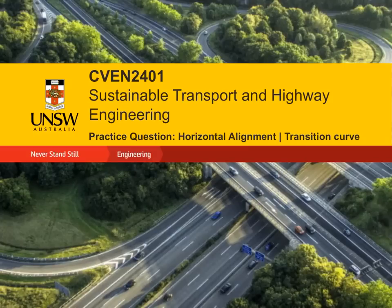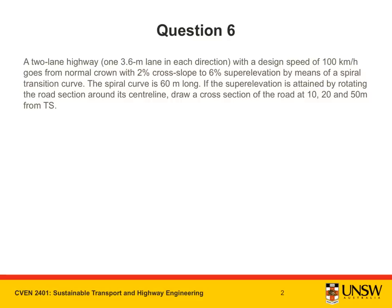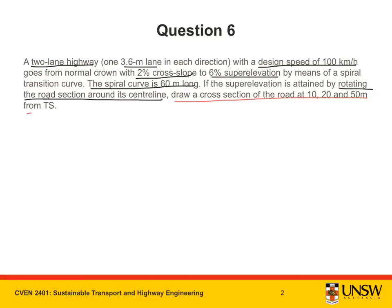In this video we're going to do a practice question on horizontal alignment, specifically for transition curves. The question is: a two-lane highway with one 3.6 meter lane in each direction, with a design speed of 100 kilometers per hour, goes from normal crown with a 2% cross slope to 6% super elevation by means of a spiral transition curve. The spiral curve is 60 meters long. If the super elevation is attained by rotating the road section around its center line, draw a cross section of the road at 10, 20, and 50 meters from TS.